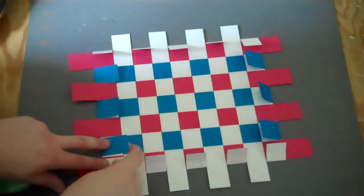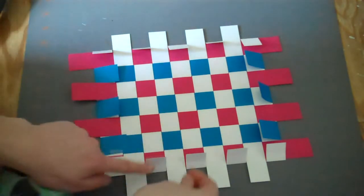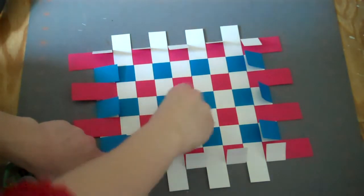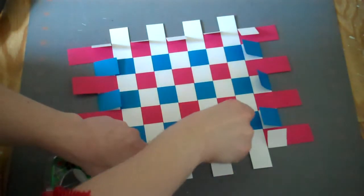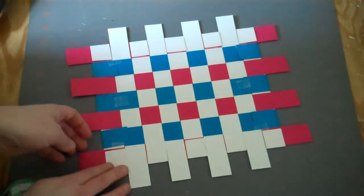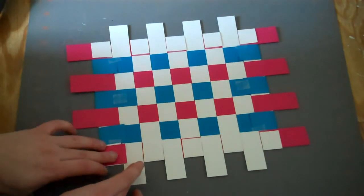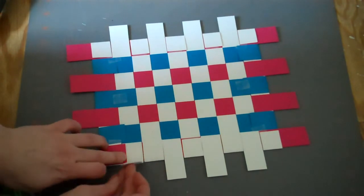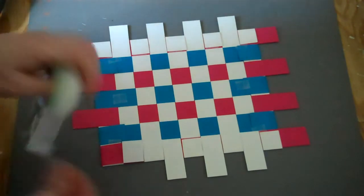Then you can just secure all the pieces you folded with a little bit of glue or tape. You'll do the same thing with all the outside strips, holding them back over themselves and securing them with a little bit of tape.